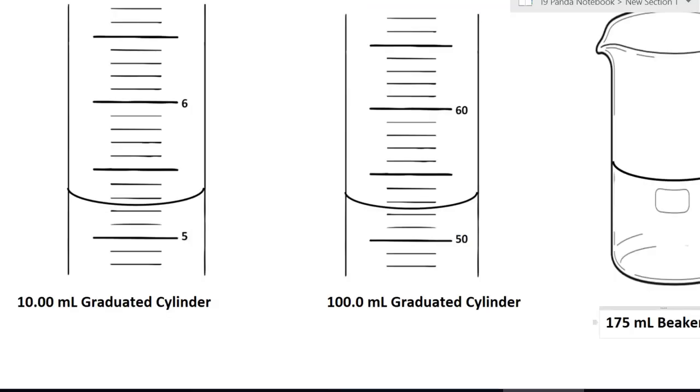For example, we are going to look at this picture with 10.00 milliliter graduated cylinder. Before we start, the difference divided by the number of increments. What's that mean? So the difference, six minus five, it will be one. That's your difference.